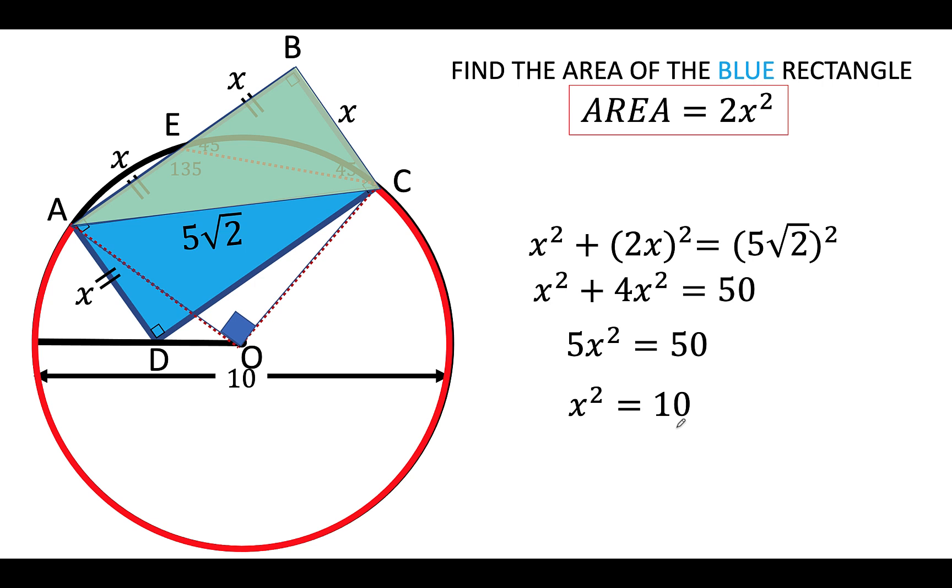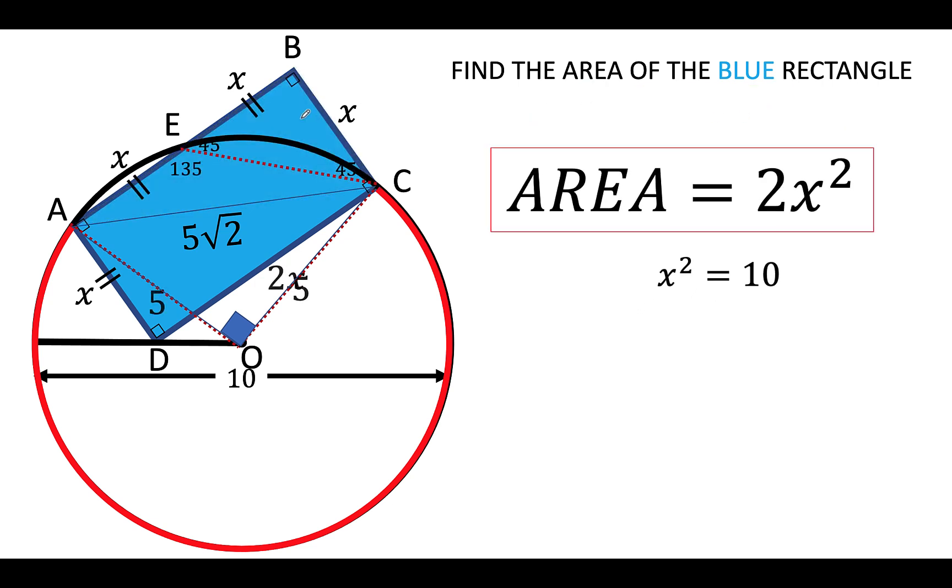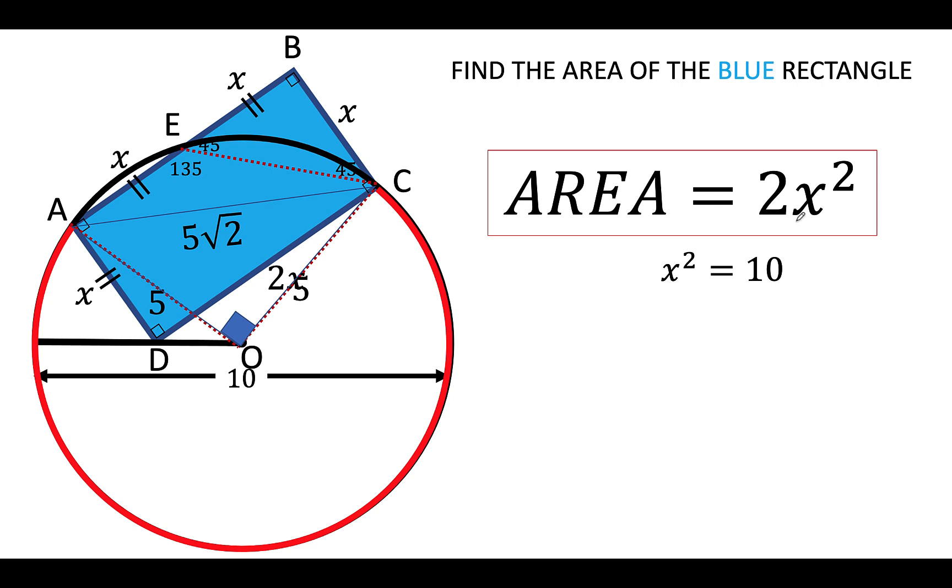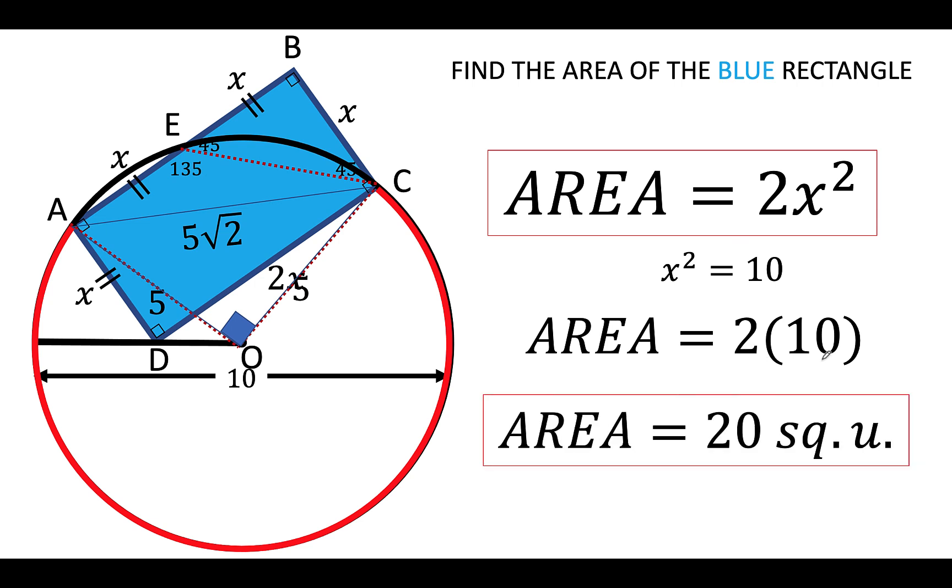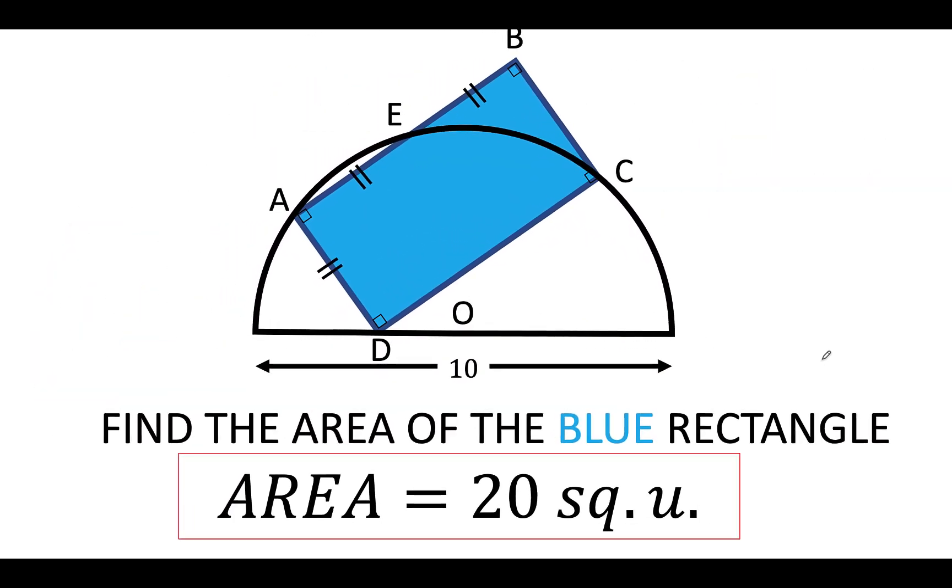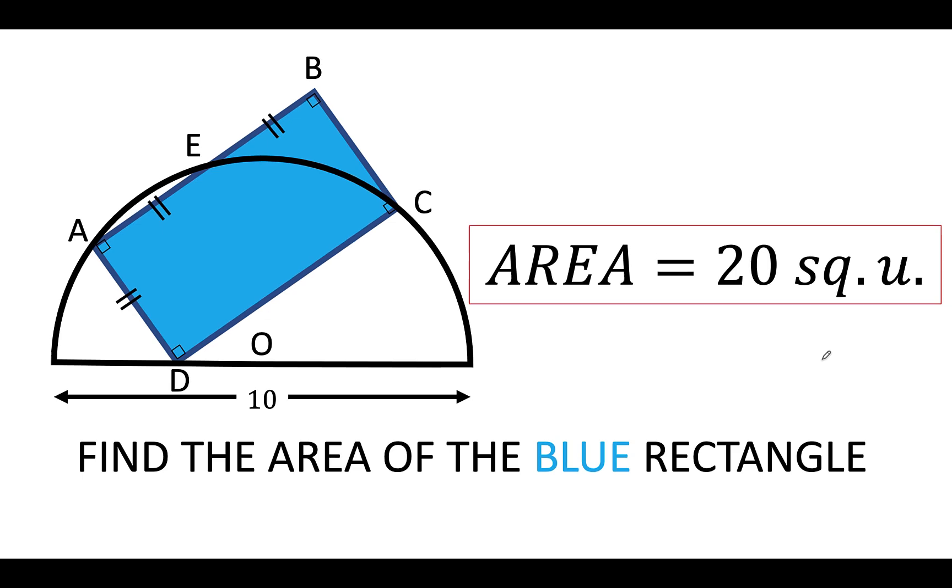There is no need for us to find the value of x, because what we want is x². If we know the value of x², then we can now find the area of the blue rectangle. So substituting now the value of x² to this formula, we now have area is equal to 2 times 10, which is equal to 20 square units. So the area of this blue rectangle is 20 square units. And that is our final answer.